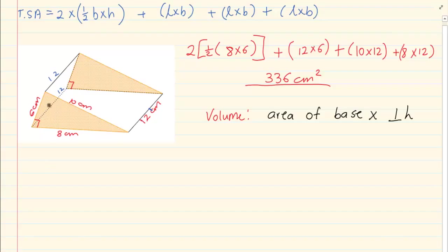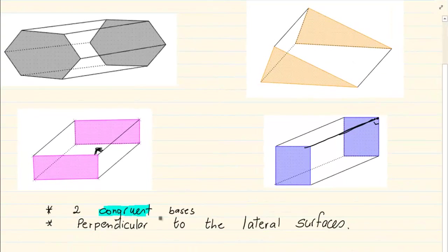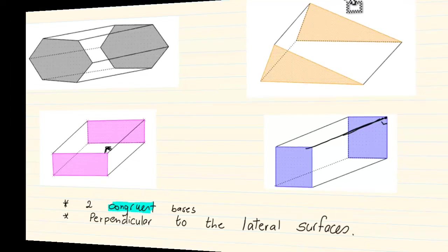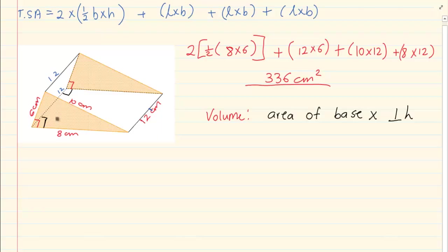If you take the rectangle at the back there, you can see it is forming a 90 degree angle. So we know that they have to be congruent — which means exactly the same — and they have to be perpendicular to the lateral surfaces. Therefore the two triangles form the base.